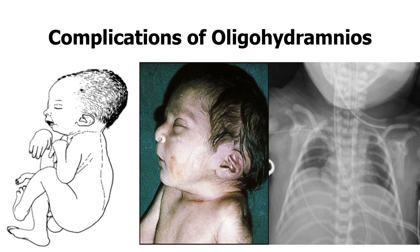The complications of oligohydramnios include contractures of the limbs of the fetus — here you can see contractures of the upper limbs and also contractures of the lower limbs. Then there is what we call Potter facies: the beaked nose, the prominent epicanthal folds, and low-set ears — if you draw a horizontal line from the lateral canthi, the ears are below the level of the eyes. And then there is pulmonary hypoplasia, where the lungs are less developed.